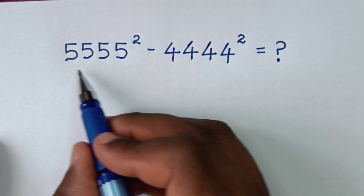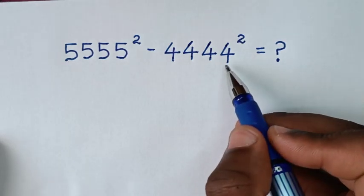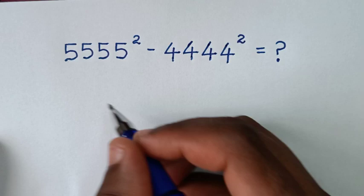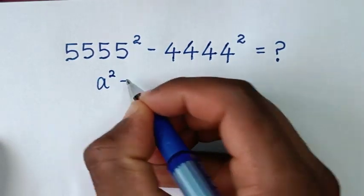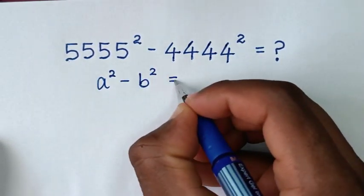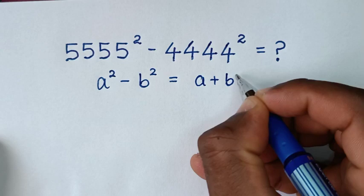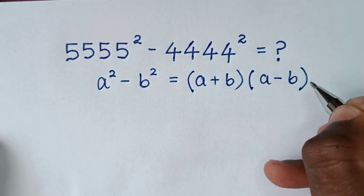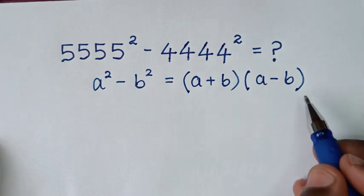Now this problem is in the form of a perfect square. So we'll apply a perfect square rule in this form, which is a squared minus b squared equals (a + b)(a - b). Then from here we'll apply this form.